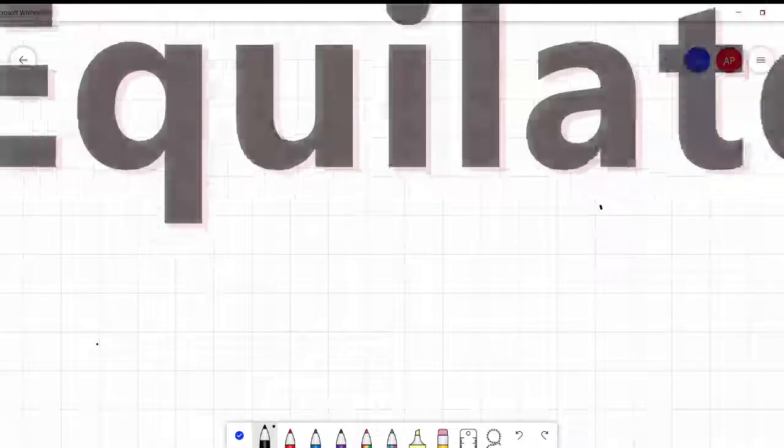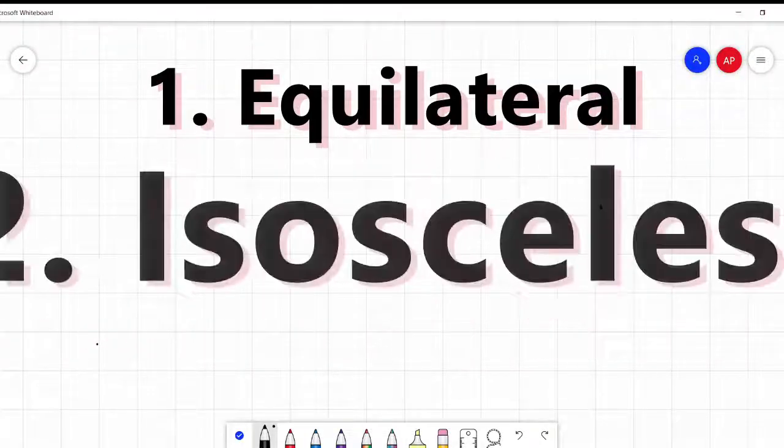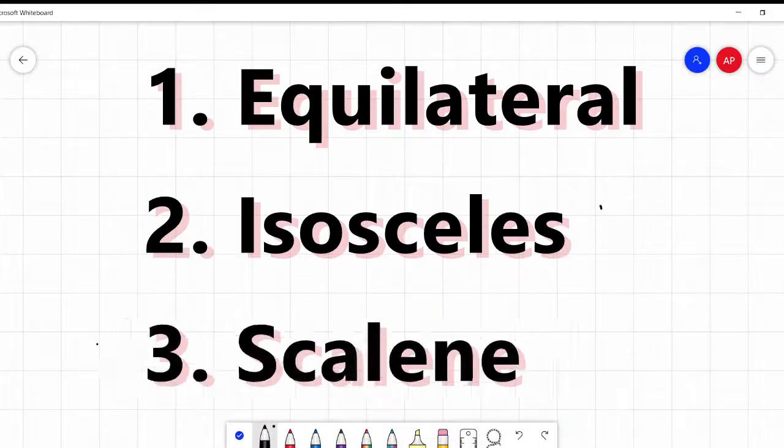There are three main kinds of triangles. They are equilateral, isosceles, and scalene. Yes, those are strange names. I know they're strange. Just got to go with it.